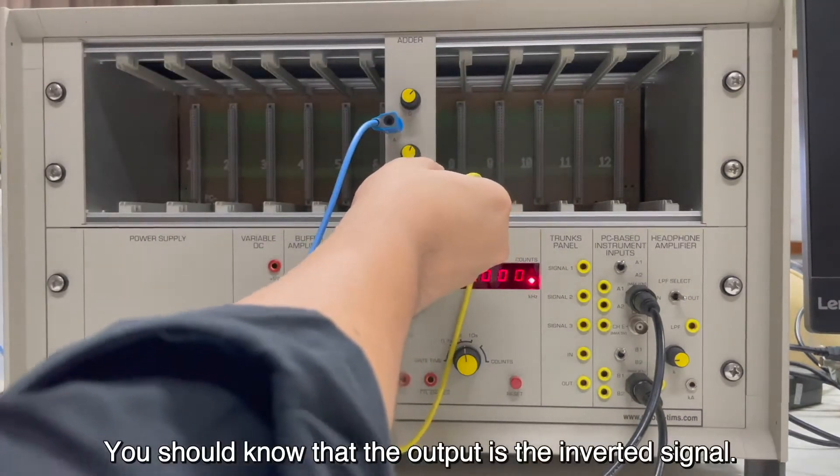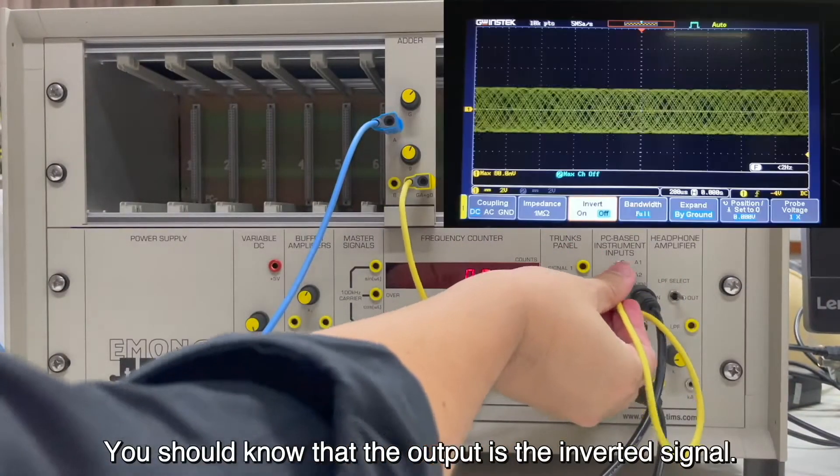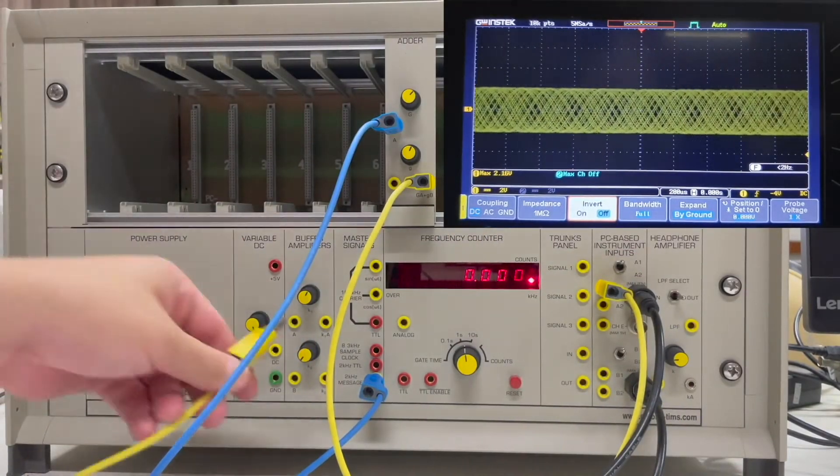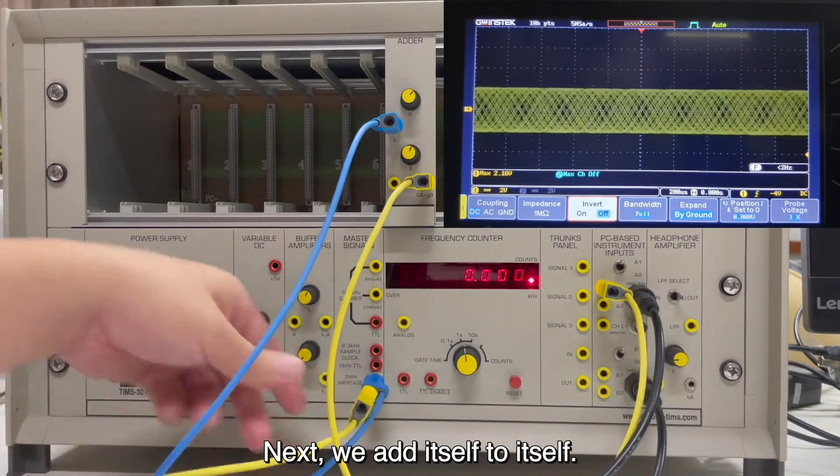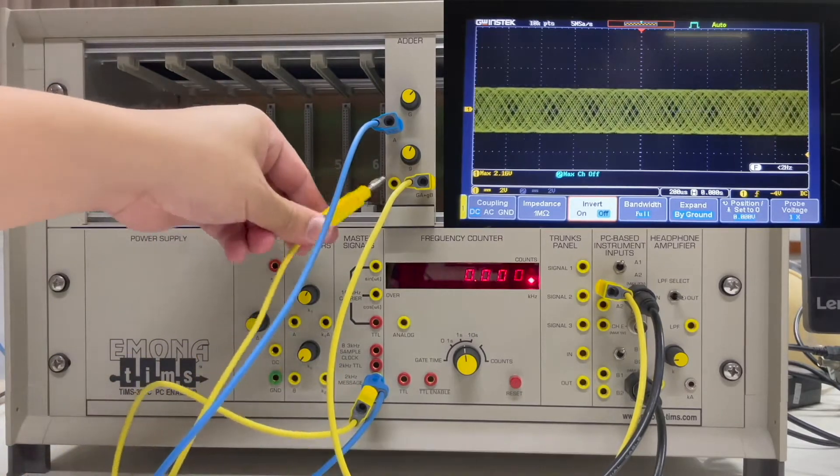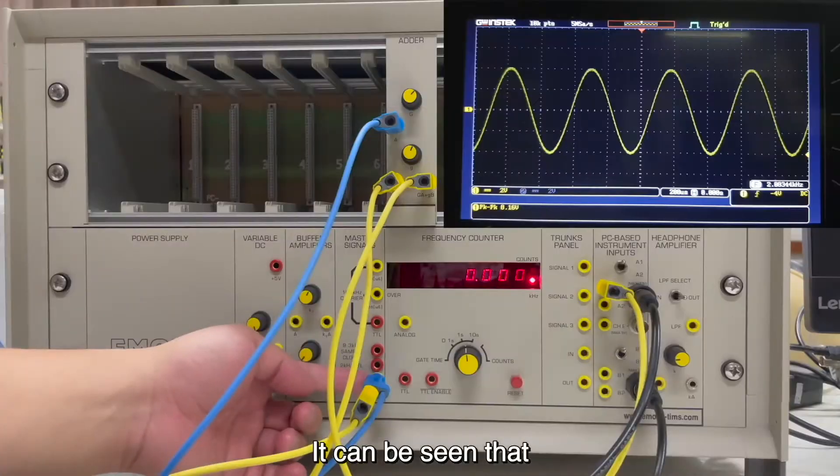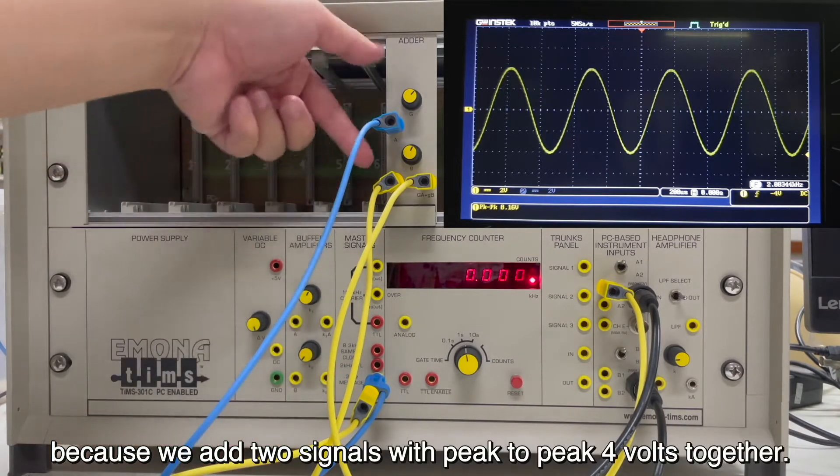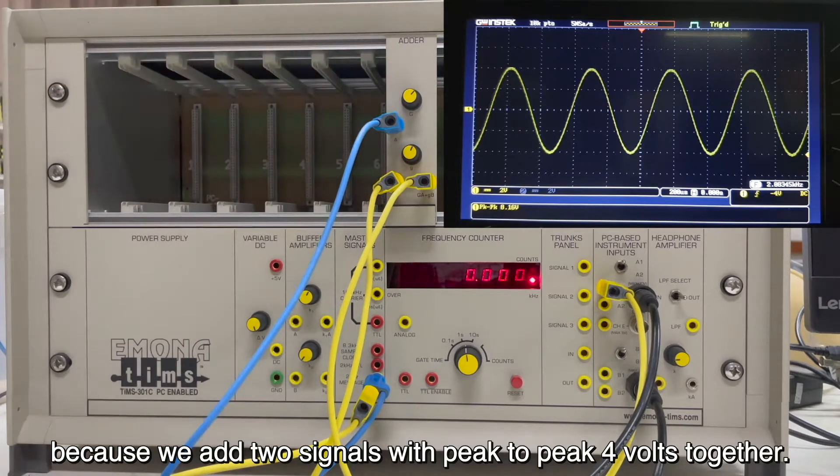You should know that the output is the inverse signal. Next, we add itself to itself. It can be seen that the output has peak to peak about 8 volts because we add the two signals with peak to peak 4 volts together.